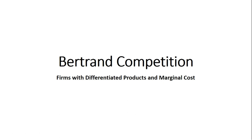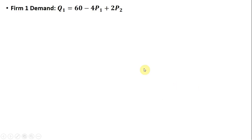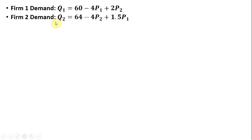In this video we're going to look at Bertrand competition in the case where firms have differentiated products and positive marginal cost. Here is firm one's demand for its product. Firm one's demand is a function of its price and it is also a function of the rival's price. Firm two's demand for its product is a function of its price and P subscript one, the rival's price.